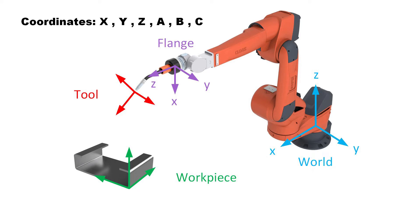It is crucial to understand that the coordinates of a programmed robot position always describe the position and orientation of a tool coordinate system relative to a workpiece coordinate system. The coordinates X, Y and Z describe how the coordinate origin of the tool coordinate system is displaced relative to the workpiece coordinate system. The three angles A, B and C indicate how the tool coordinate system is rotated relative to the workpiece coordinate system.